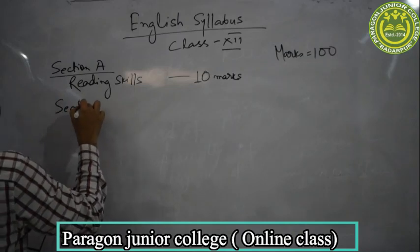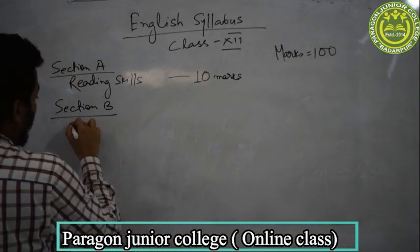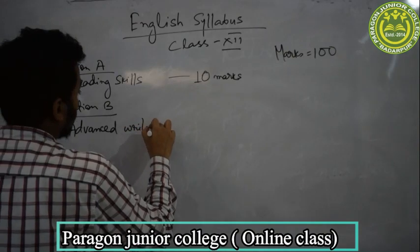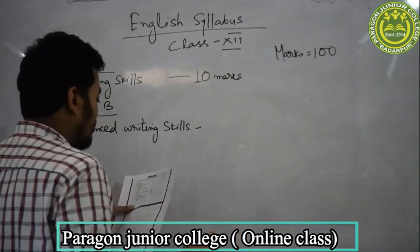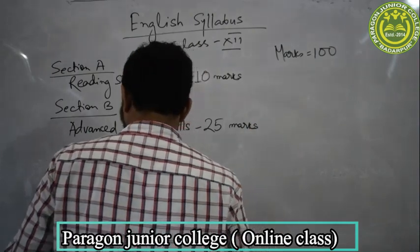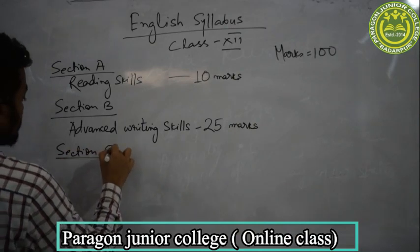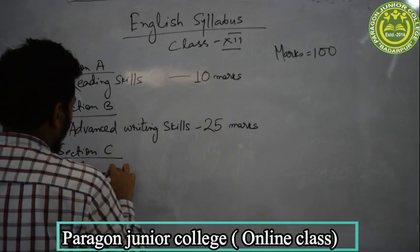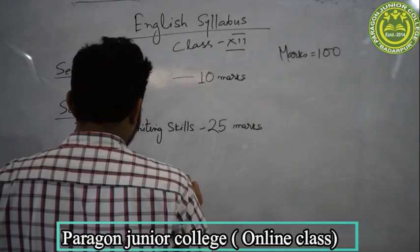Section B: Advanced Writing Skills, which consists of 25 marks. Section C: Grammar, which consists of 20 marks.